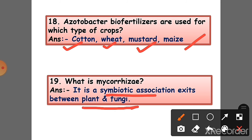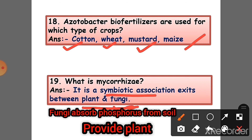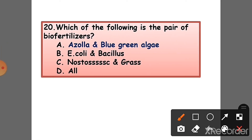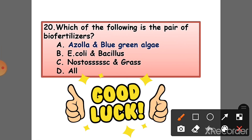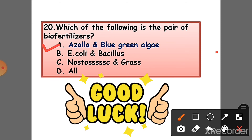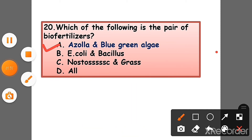In this association, fungi absorb phosphorus from the soil and provide it to the plant for growth. Question 20: Which of the following is a pair of biofertilizers? Answer: Azolla and blue-green algae.